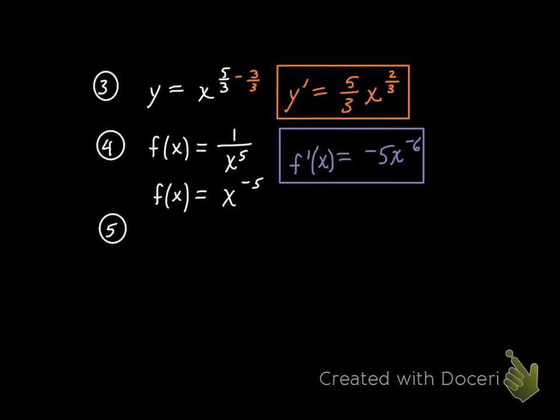Here comes number five. Now sometimes you see a variable that you're a little uncomfortable with. This is the Greek letter alpha. H of alpha equals one over the fourth root of alpha. Again, reformatting this problem before you attempt to take the derivative is important.